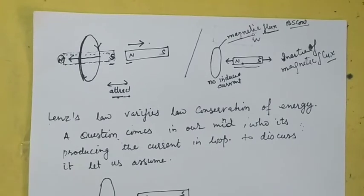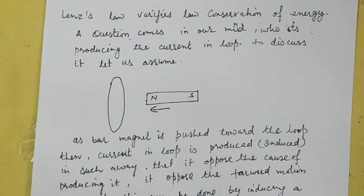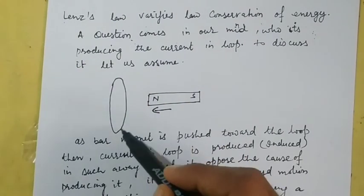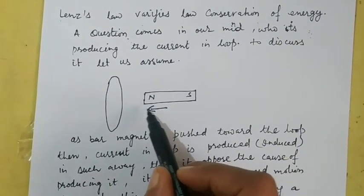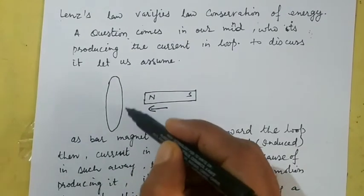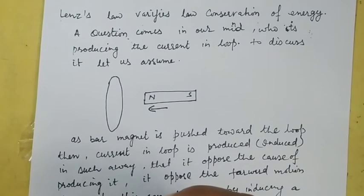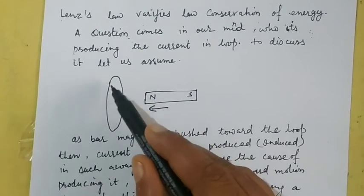Lenz's law verifies the law of conservation of energy. A question arises: who is producing the induced emf or current in the loop? Consider a loop with a magnet placed on its axis. As we push the bar magnet towards the loop, according to Faraday's law, an induced current or emf is produced. Lenz's law says this induced emf opposes the cause producing it — here, the motion of the magnet towards the loop.